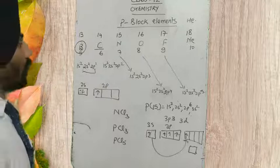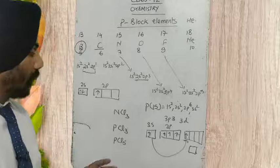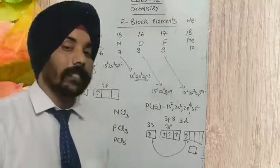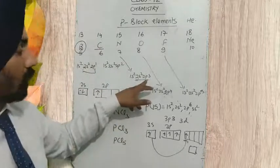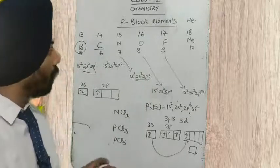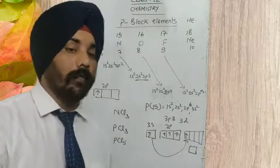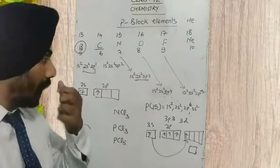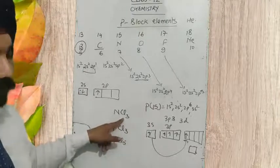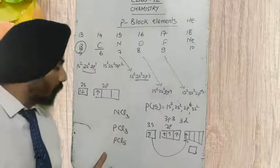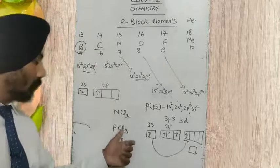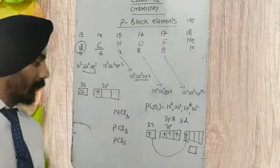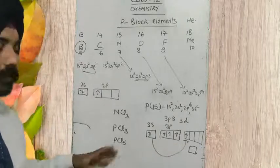But nitrogen is having only 4 orbitals, and it can expand its electronic configuration maximum up to 4. The maximum covalency limit is 4, but we have only 3 unpaired electrons. Whatever number of unpaired electrons is available with the atom, only that many atoms can join with it. Nitrogen has only 3 unpaired electrons, so only 3 chlorine atoms can join with nitrogen. But phosphorus exists in two forms: PCl₃ and PCl₅.